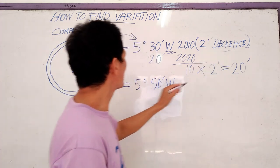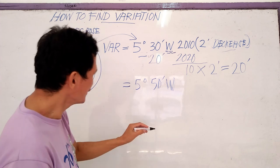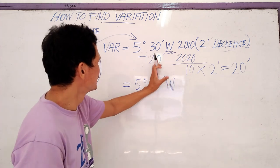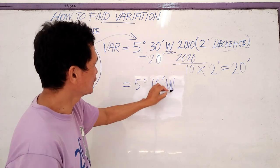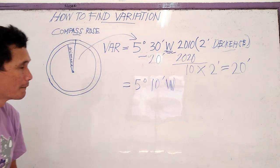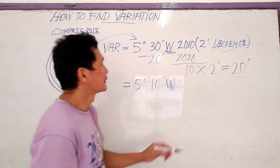It says here decrease, so we will minus. So this will become ten minutes. Again, it is West because West is here. So in the original increase, two minutes is the annual increase.